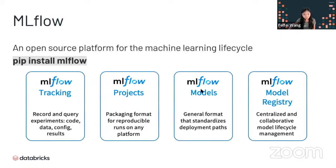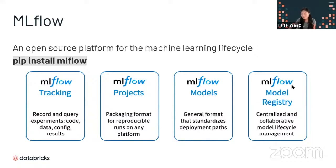MLflow has four major components. Tracking helps you track your code, data, configuration, results, and model-related information. ML Project helps with packaging to different formats for reproducibility of runs on any platform. MLflow Models provides a general standardized deployment format, and the MLflow Model Registry is a centralized, collaborative model lifecycle management tool.